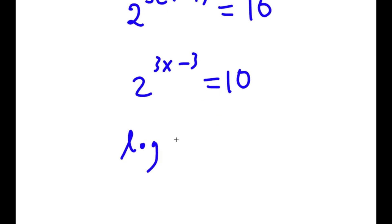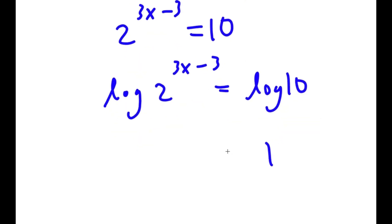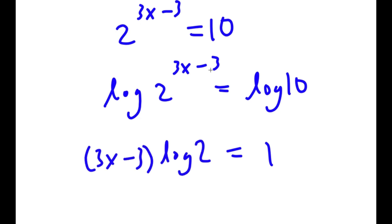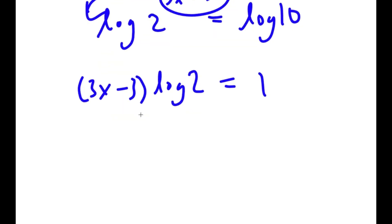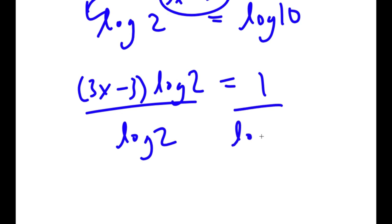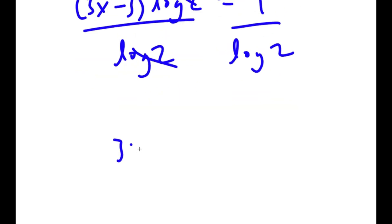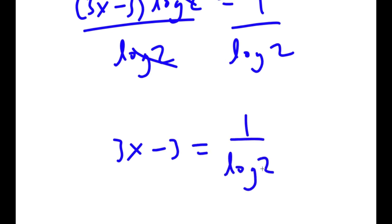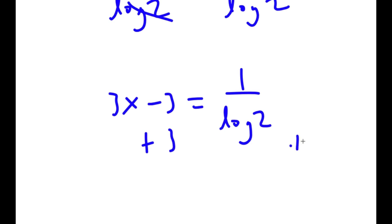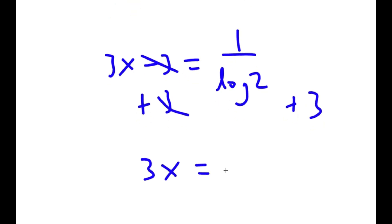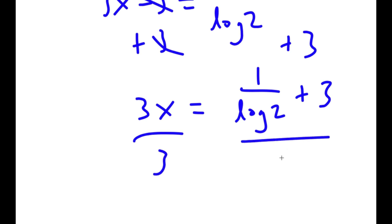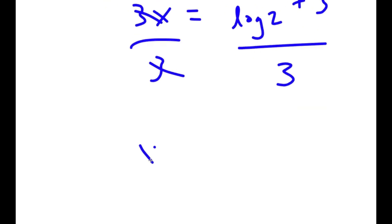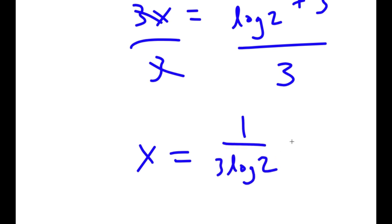Now I'm going to take the log on both sides. So I get log of 2 to the power of (3x minus 3) is equal to log 10. And log 10 is equal to 1. So I get 1 is equal to (3x minus 3) times log 2, because I can move the exponent to the front. Dividing both sides by log 2, I get 3x minus 3 is equal to 1 over log 2. Adding 3 to both sides, I get 3x is equal to 1 over log 2 plus 3. Dividing both sides by 3, I get x is equal to 1 over (3 log 2) plus 1.